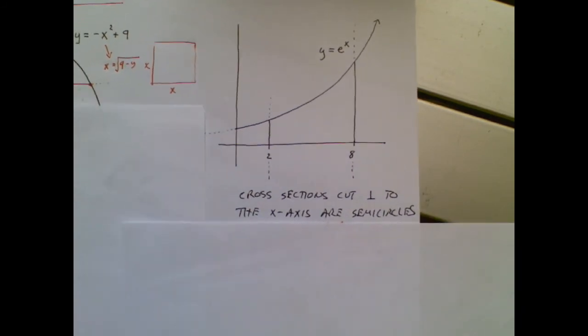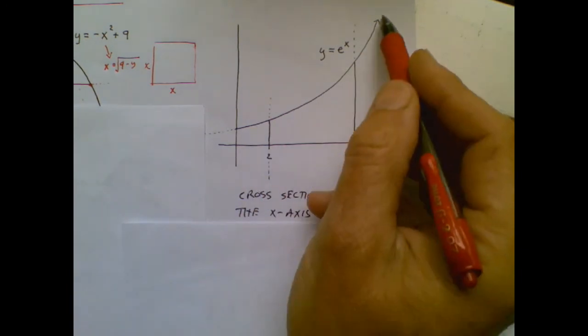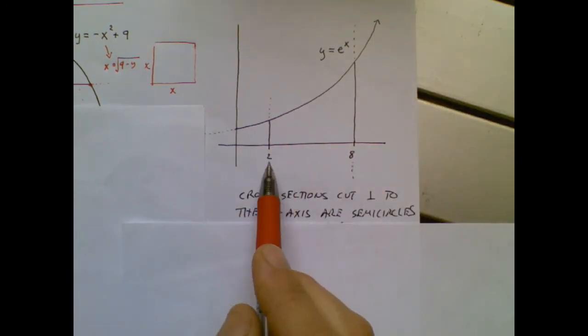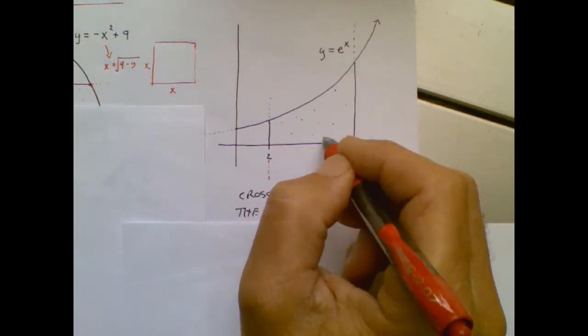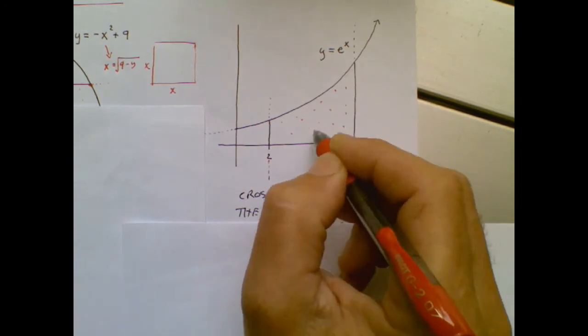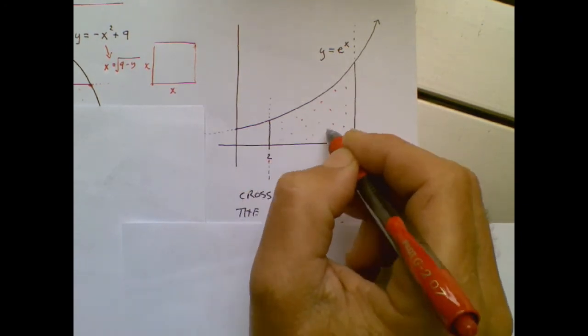All right, I have a new region. It's using the e to the x function. And in this case, I said it's going to start at 2 and end at 8. So we really only care about this region. Now this region is not going to be rotated about any axis.